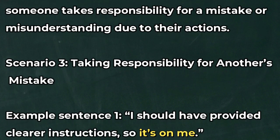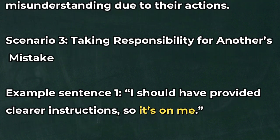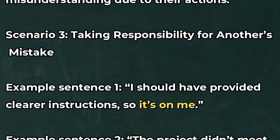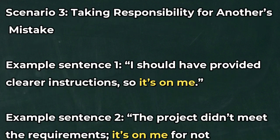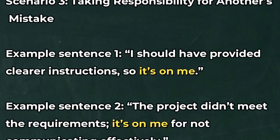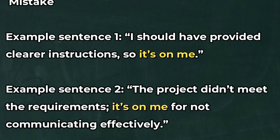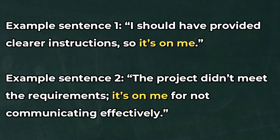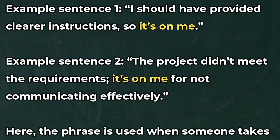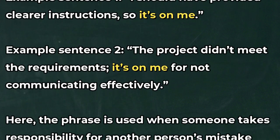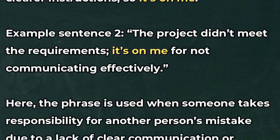Scenario 3: Taking responsibility for another's mistake. Example sentence 1: 'I should have provided clearer instructions, so it's on me.' Example sentence 2: 'The project didn't meet the requirements — it's on me for not communicating effectively.'